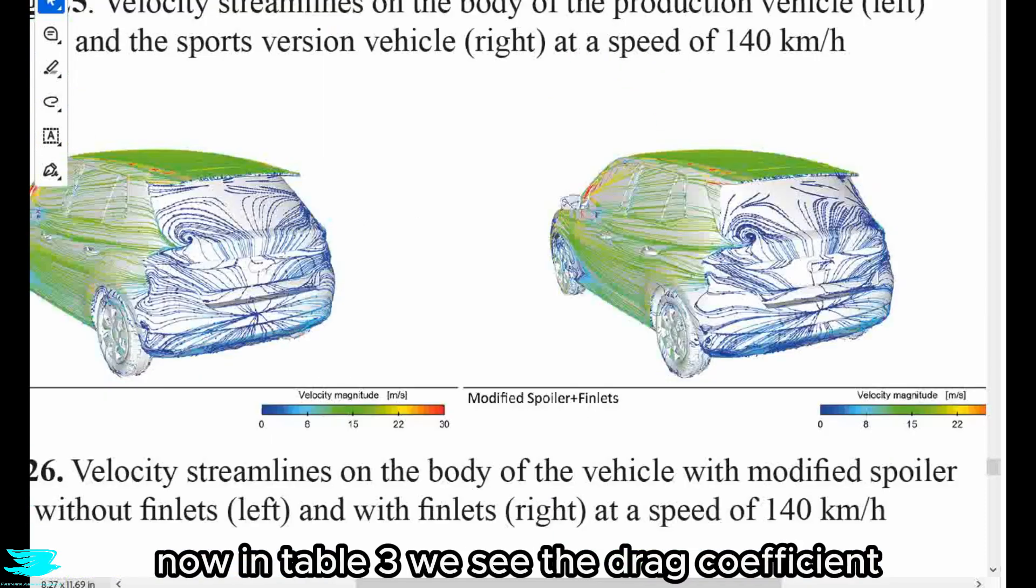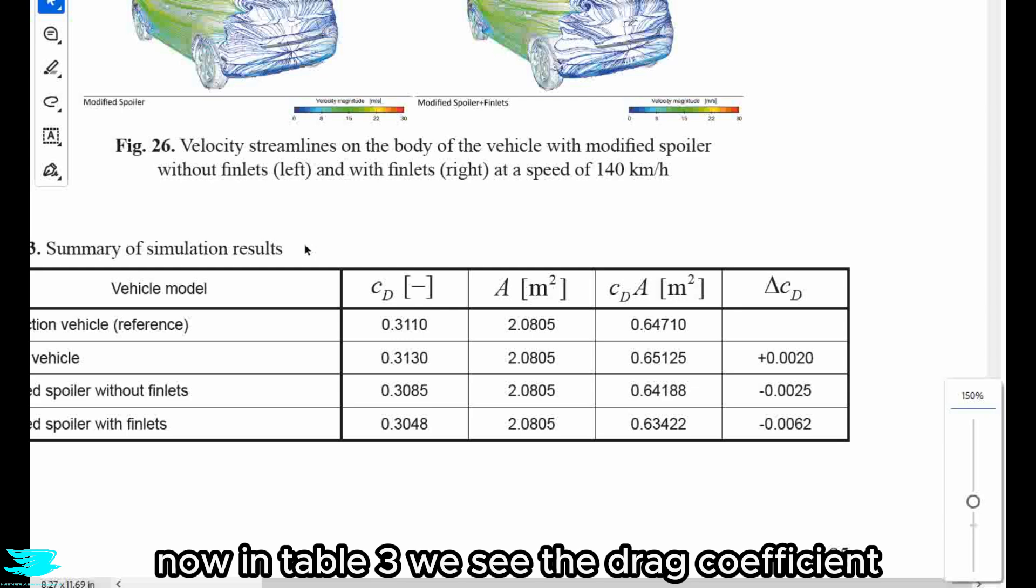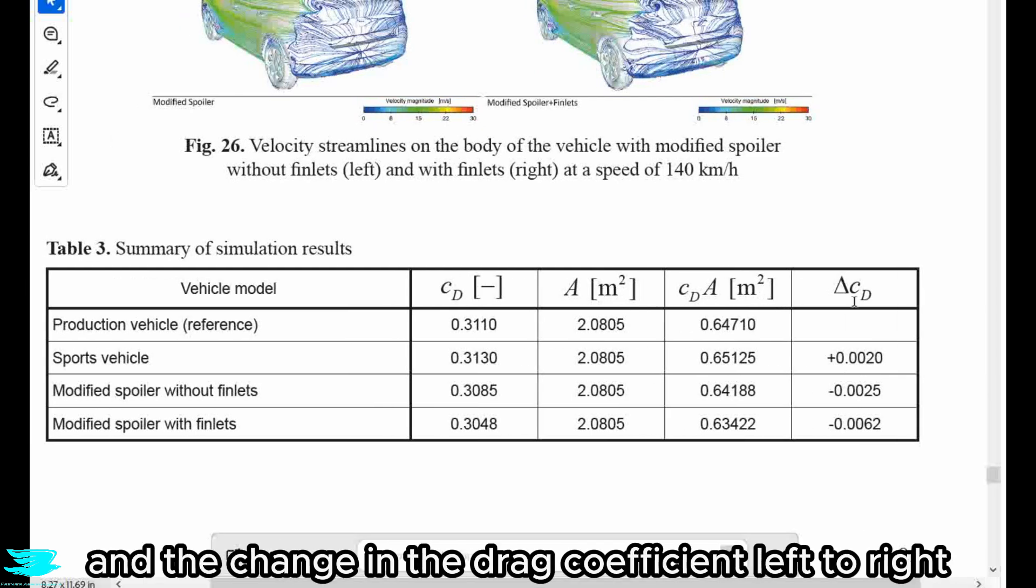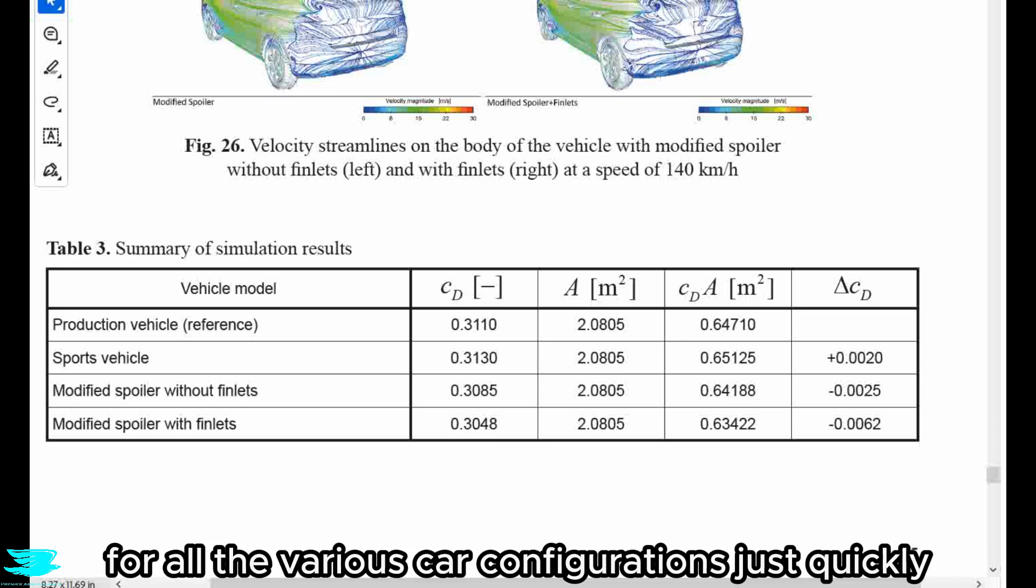So now I think we know one major reason why we saw lower drags with the larger spoiler and especially with the finlets. Now in table 3, we see the drag coefficient, the frontal area, the drag area, and the change in the drag coefficient left to right of the various car configurations.